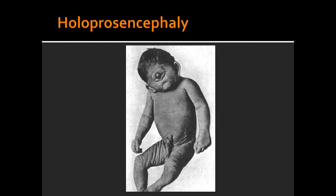What is holoprosencephaly? Holoprosencephaly is the failure of the left and right hemispheres to separate, and this usually occurs during weeks 5 to 6. Mutation of what pathway can result in holoprosencephaly? The mutation of the sonic hedgehog signaling pathway can lead to holoprosencephaly.